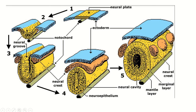This is the ectoderm, and this is the ectodermal thickening. A groove is developed here, known as the neural groove, and on two sides there are two neural folds. The tissue of the neural fold is detached and forms the neural crest. The rest of the neural fold comes closer and ultimately forms a tube — this is the neural tube. The remaining portion of the ectoderm is converted into surface ectoderm.